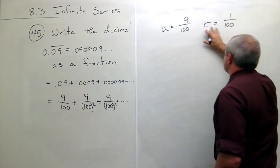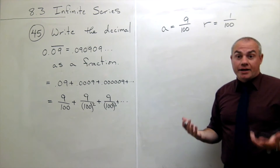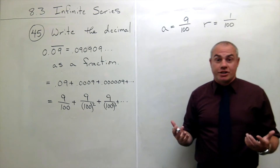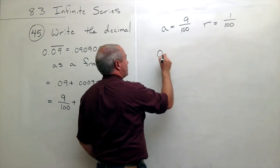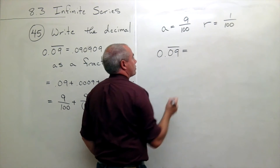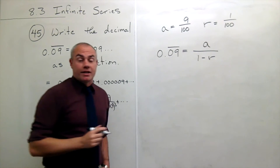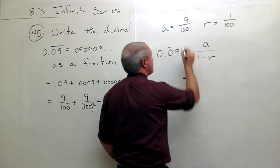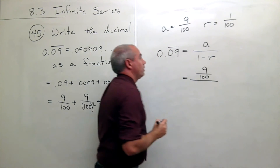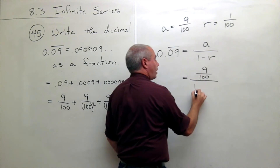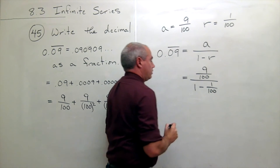You can see right now: is the absolute value of r less than 1? Yes, it is, and so this thing converges. What it's going to converge to is: 0.09 repeated equals a over 1 minus r. Well, a in this case is 9 over 100, and that's over 1 minus r, which is 1 over 100.